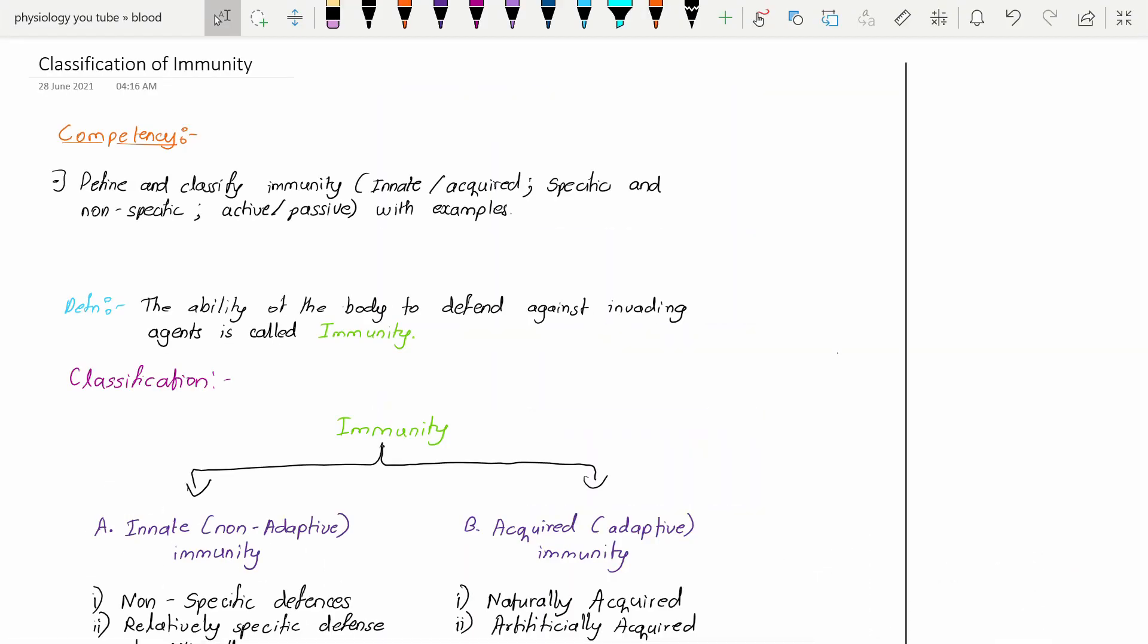Hello everyone, in this video we will study the classification of immunity. Immunity is the most important chapter and we need to be thorough with this. Competency for today's class: define and classify immunity, innate immunity or acquired immunity, specific and non-specific, active or passive immunity with examples.